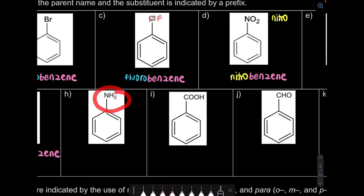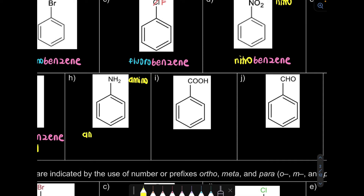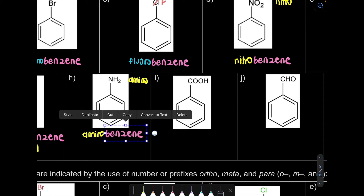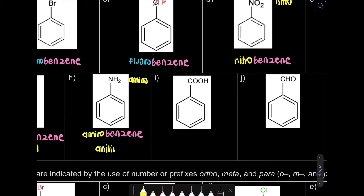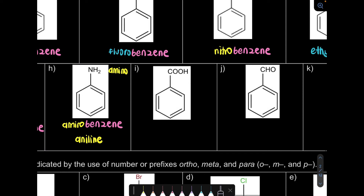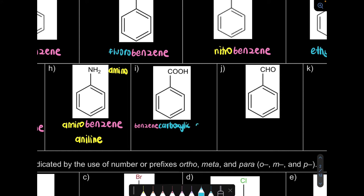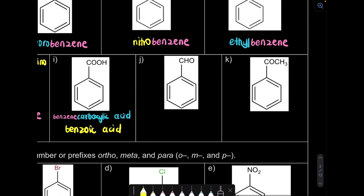For question H, we have NH2 — the NO part is nitro, and NH2 is amino. So the naming becomes aminobenzene, or we usually call it aniline. For question I, this is actually carboxylic acid. The name can be benzene carboxylic acid, but we usually call it benzoic acid.